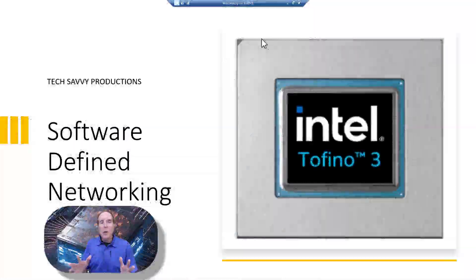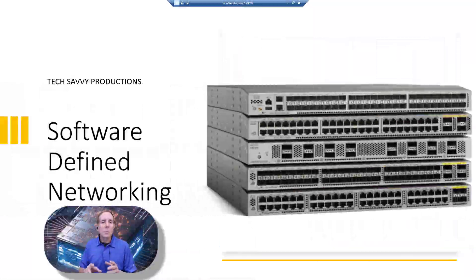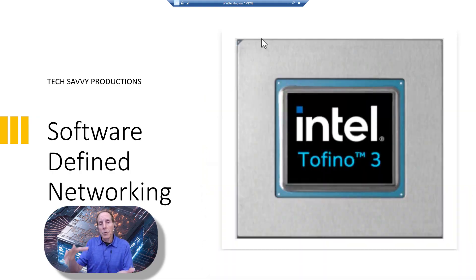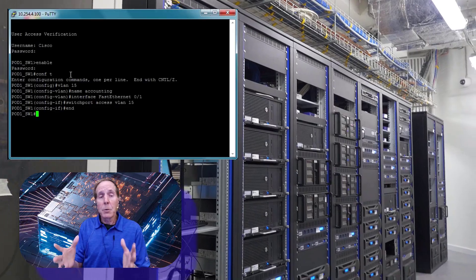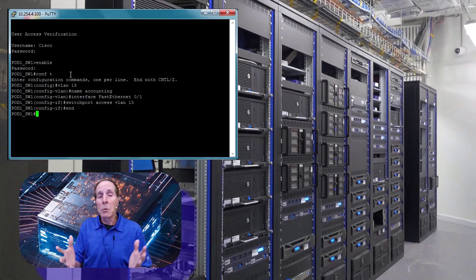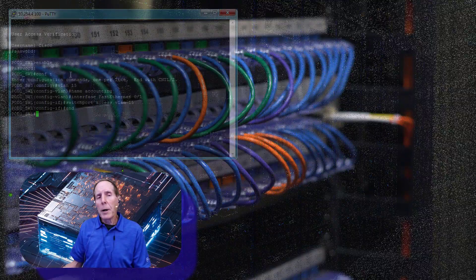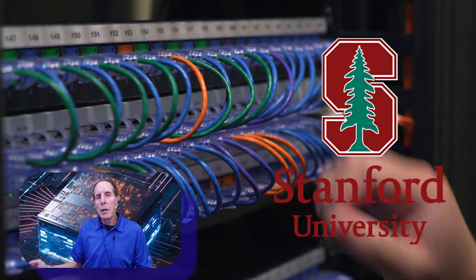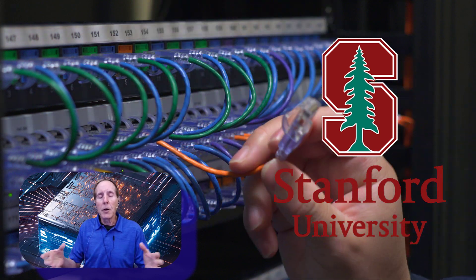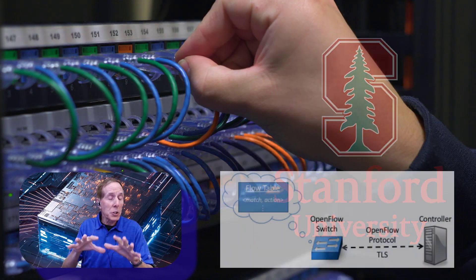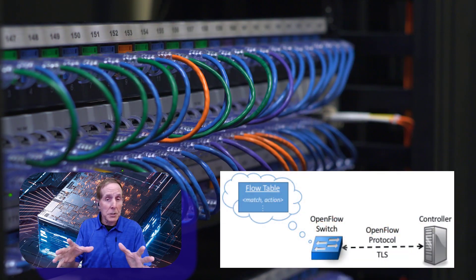By about 2007 to 2009, Cisco Systems owned the Ethernet switch market. With their proprietary iOS, about 86% of the market share was owned by Cisco Systems. About that time, a number of universities began to explore the idea of an open source switch operating system. That began SDN.